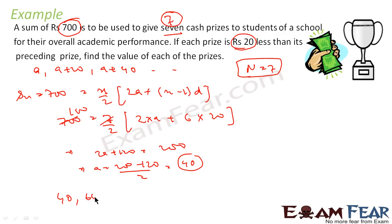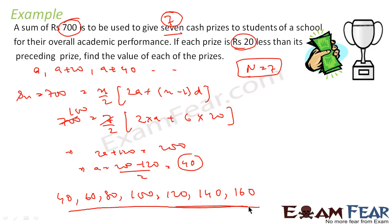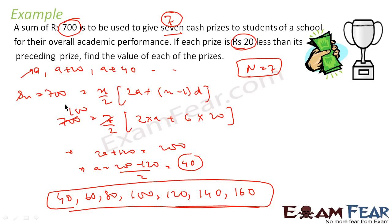Since A=40, the 7 prizes are: 40, 60, 80, 100, 120, 140, and 160. Each prize is 20 more than the previous. The prizes are in AP with A=40, D=20, and N=7. We knew D=20 from the problem statement, found A=40, and listed all 7 prize values.